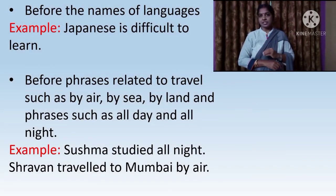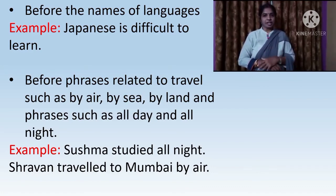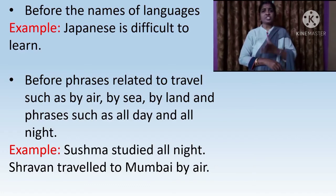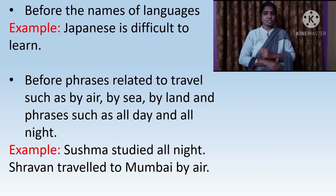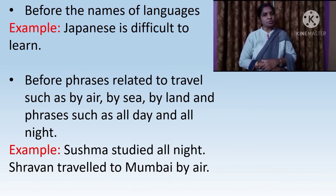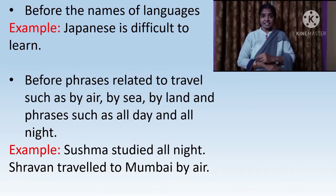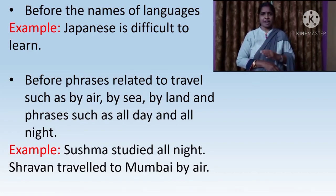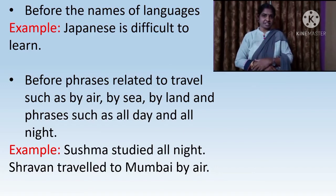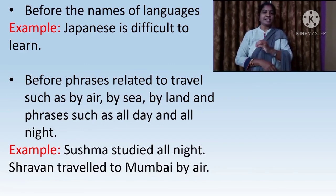We don't use articles before languages. You don't say the Sanskrit, the Telugu, the Hindi. For example: Japanese is difficult to learn — no article before Japanese. We also don't use articles before phrases like by air, by land, by road, all night. For example: Sushma studied all night. Shravan travelled to Mumbai by air, which means in an aeroplane.